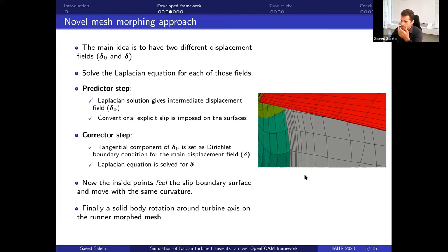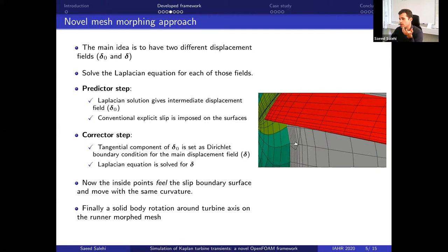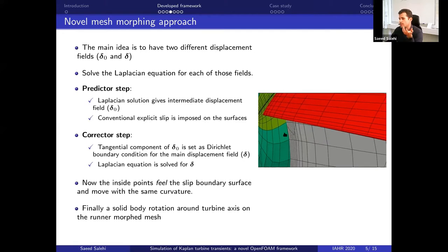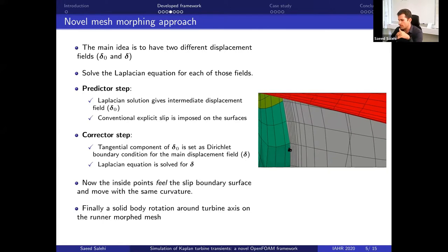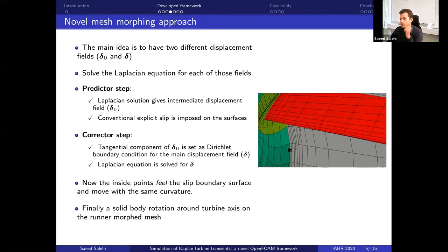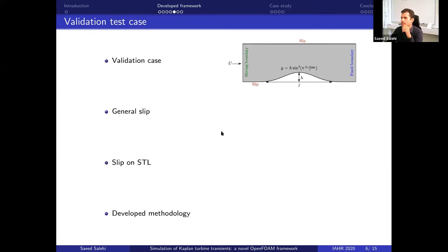With this implementation, the points inside can now feel that boundary movement or boundary curvature. They might get closer to the shroud, but they don't hit it, so we can deform the mesh for larger angles. As a simple test case, here is a bump with a moving boundary and a fixed boundary — points on the bump and top boundary should slip on these two boundaries.